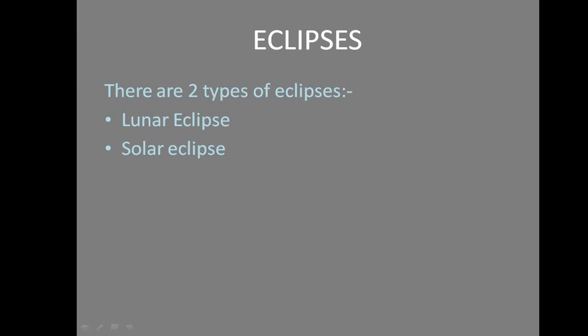Eclipses are basically the shadow of one heavenly body formed on another heavenly body — that is what is known as an eclipse. There are two types of eclipses: a solar eclipse and a lunar eclipse. We are going to start by studying the lunar eclipse.